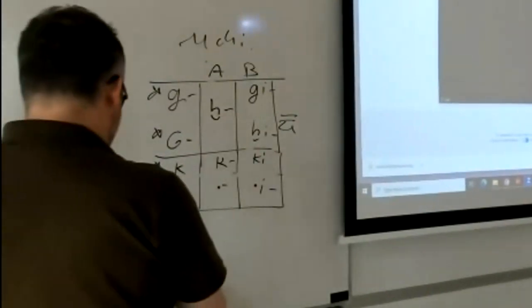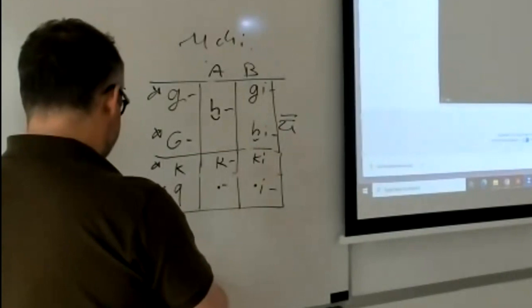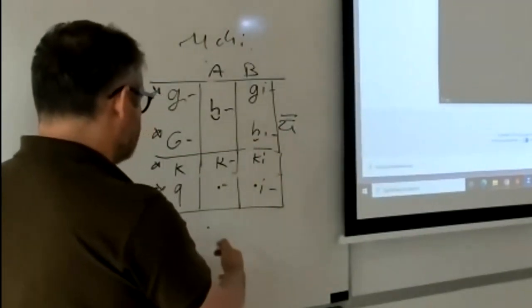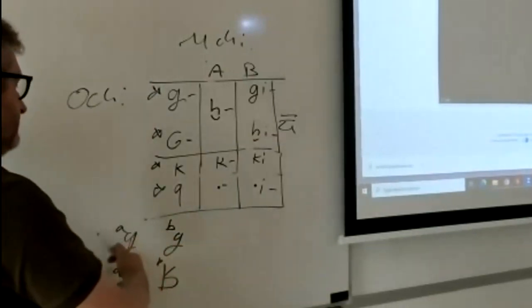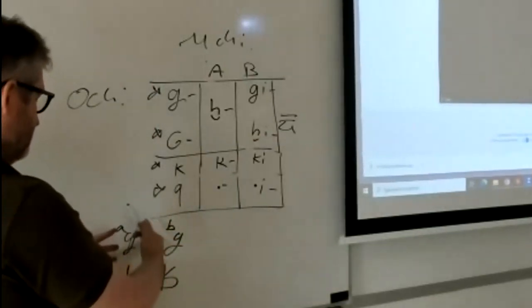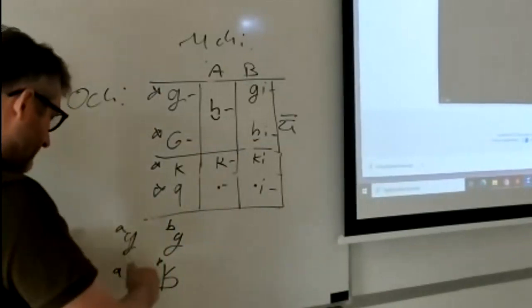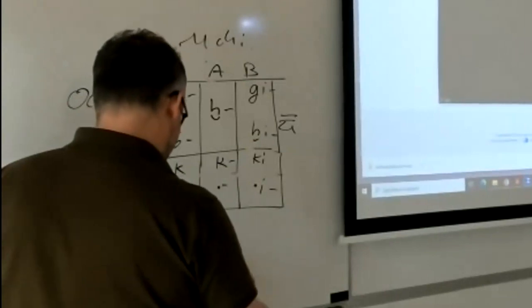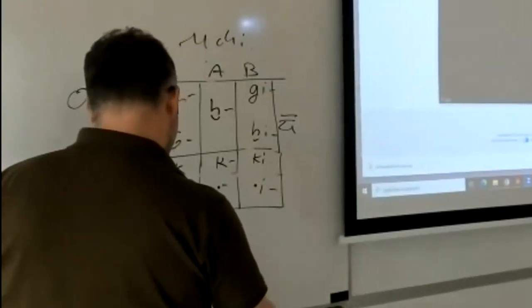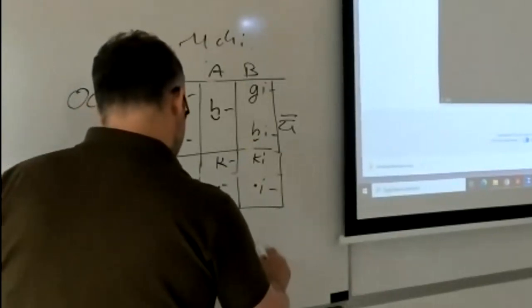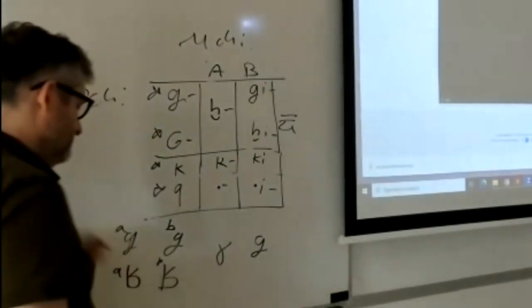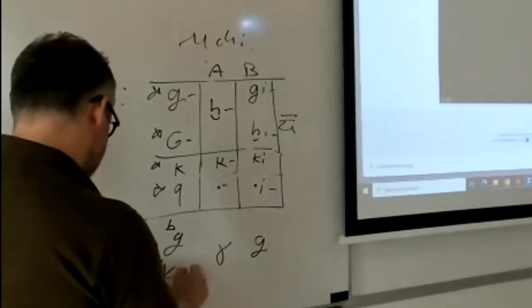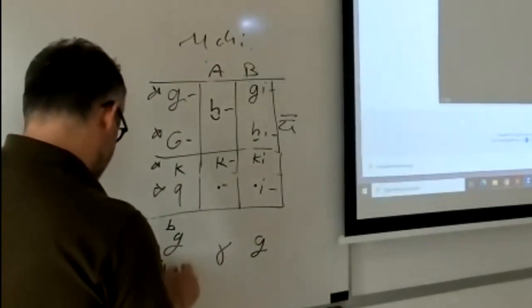Then the b ones fronted and the g ones, this one at least, sort of fricativized. So then we have a system where we just have these two.